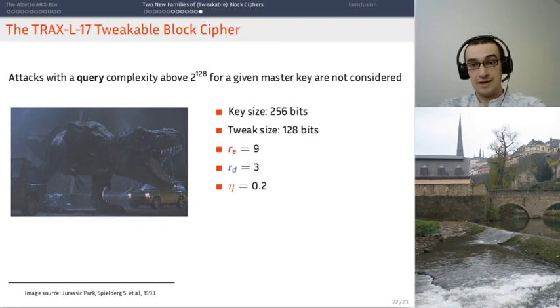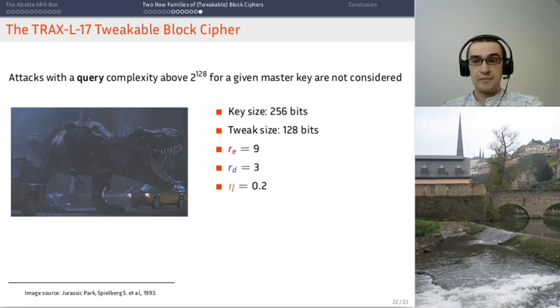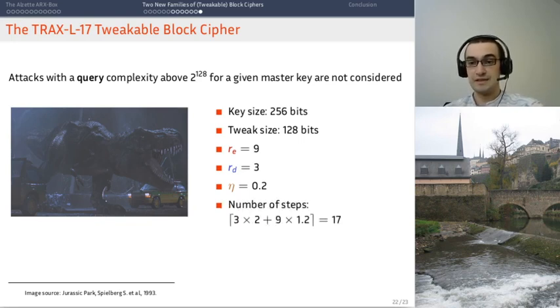So, we have done just that. T-RAX-L is a tweakable block cipher. So, we have taken the round function that I have showed you before, added a key schedule to it to handle the master key. The tweak is just xored into the state every second step, because we have found that we got the best bounds when the tweak was added every second step. It has a 256-bit key, a 128-bit tweak, a 256-bit block size, and using the same type of analysis as before, we have found that it needs 17 steps.